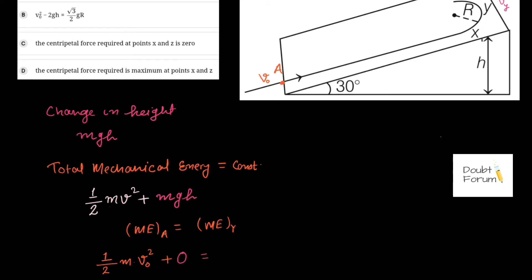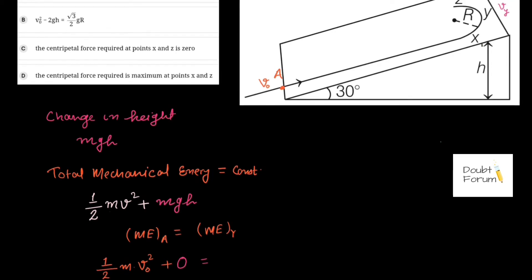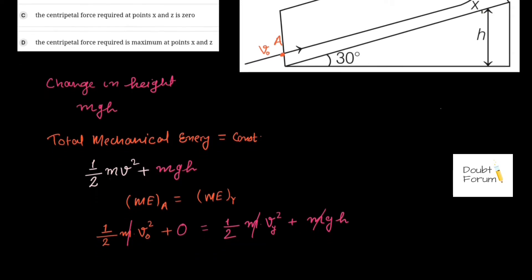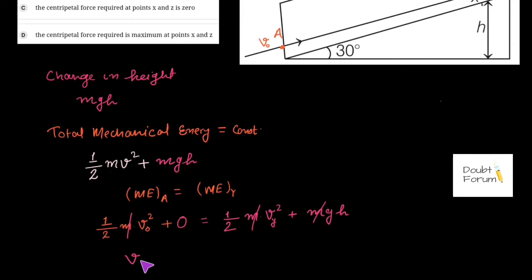At point Y, kinetic energy is ½mVy² and potential energy is mgh, since the height is H. Cancelling mass M from both sides, the conservation equation gives: V0²/2 = Vy²/2 + gH.